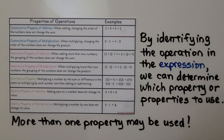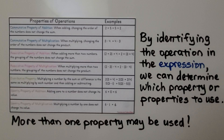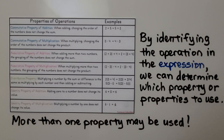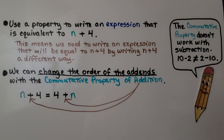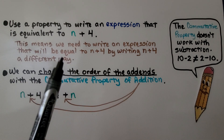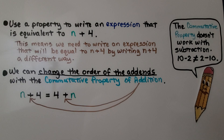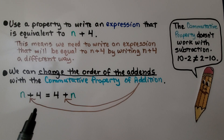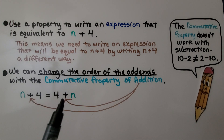By identifying the operation in the expression, we can determine which property or properties to use. More than one property may be used. For example, we're asked to use a property to write an expression equivalent to n plus four. We can change the order of the addends with the commutative property of addition and write four plus n.